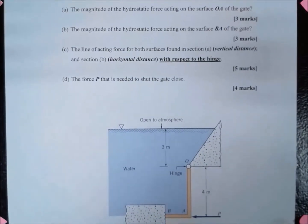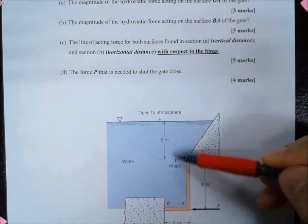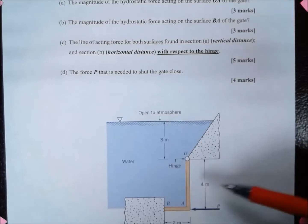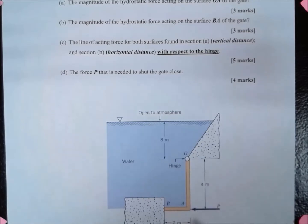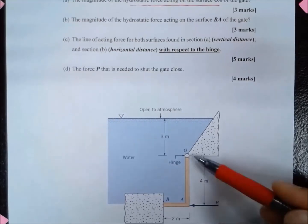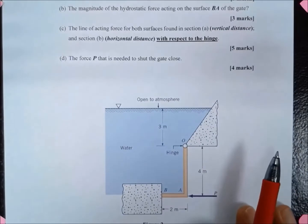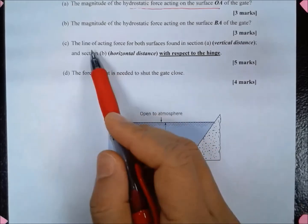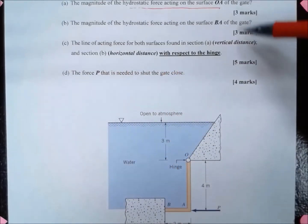Looking at the diagram, this is the gate. The distance between the hinge and the water surface is 3 meters. The height of the gate: from O to A is 4 meters, and from A to B is 2 meters. We are asked to determine the magnitudes of the hydrostatic force acting on surface OA and on surface BA, which is the bottom part of the gate, and the lines of action of the force on both surfaces.